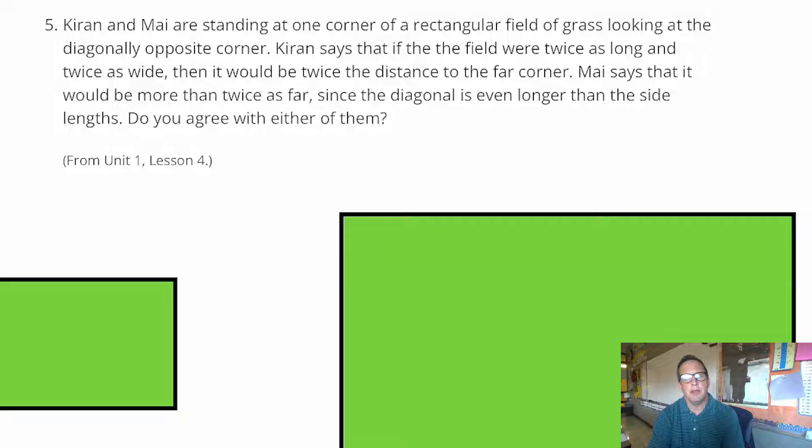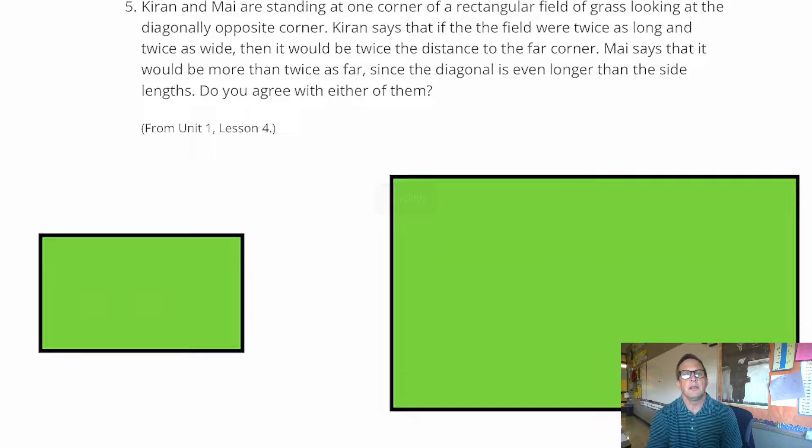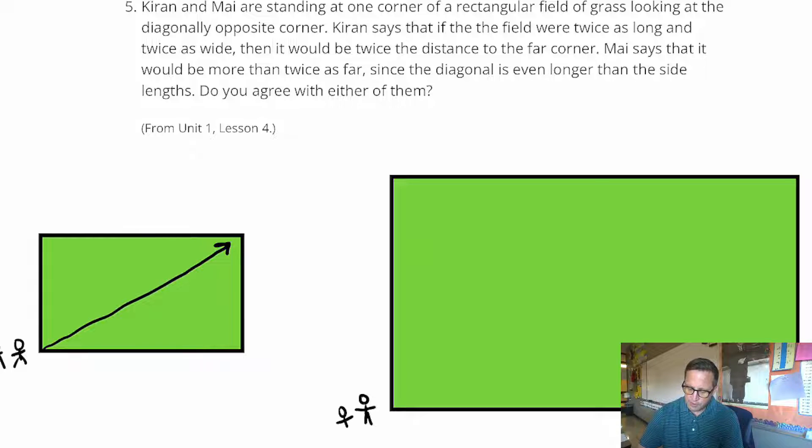For number 5, we've got Kieran and May are standing on one corner of a rectangular field, grass, and they're looking at diagonal opposite corner. So I would say like they're right here, and they're just kind of looking at that corner right there. There's just two people here standing around, and they're looking at this diagonal that goes across. Kieran says that if the field were twice as long and twice as wide, that it would be twice the distance to the far corner. May says that it would be more than twice as far. Since the diagonal is even longer than the side lengths, do you agree with either of them?